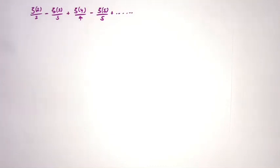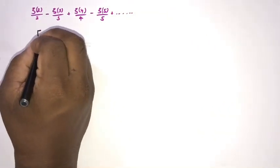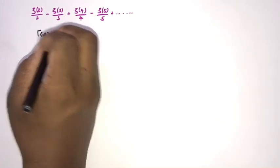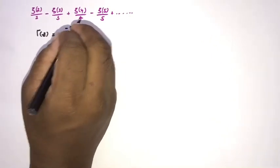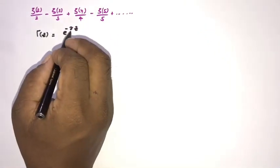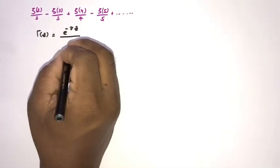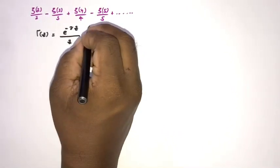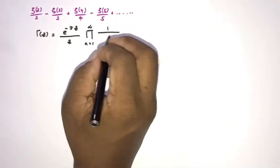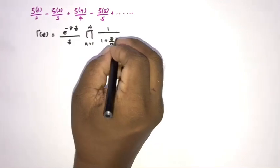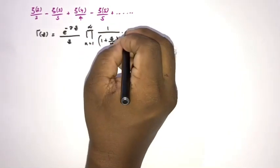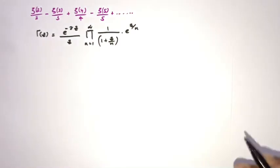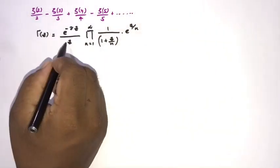In this video I am going to begin with the Weierstrass definition of the gamma function. We know that Γ(C) is equal to e^(−γC) — here γ is Euler's Mascheroni constant — over C, then the infinite product from n=1 to infinity of (1/(1 + C/N)) times e^(C/N).